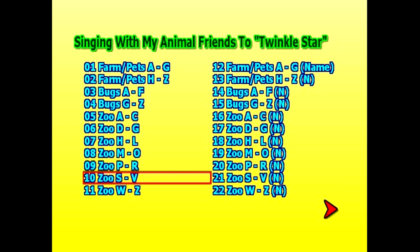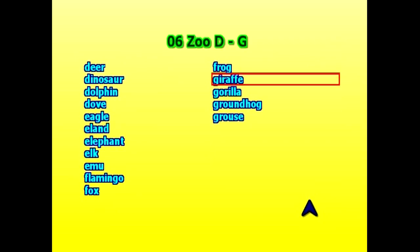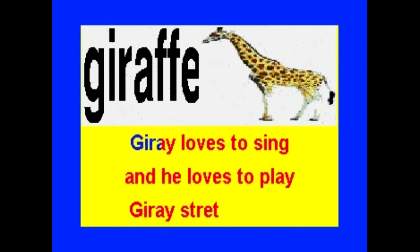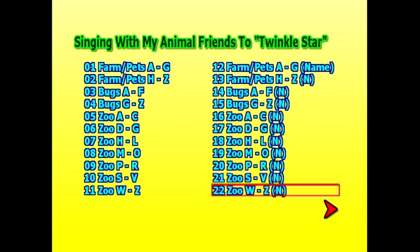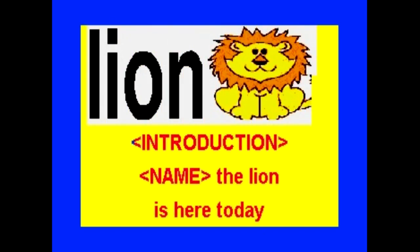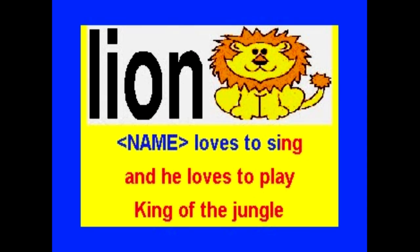Let's say one of the children wants to hear a song about a giraffe. Go to D to G, then go to giraffe, click on it, and the giraffe song will begin to play. 'It's Giray the giraffe — the giraffe is here today.' Click the menu button and go back. Now let's say a child wants a song about a lion, and you want to use your voice rather than my vocal. Go to the right side — those folders without my vocal, just the soundtrack. Go to H to L, find lion, click on it, and sing the lion song using your voice. 'How about Leo? Leo the lion is here today.' And that's all there is to it.